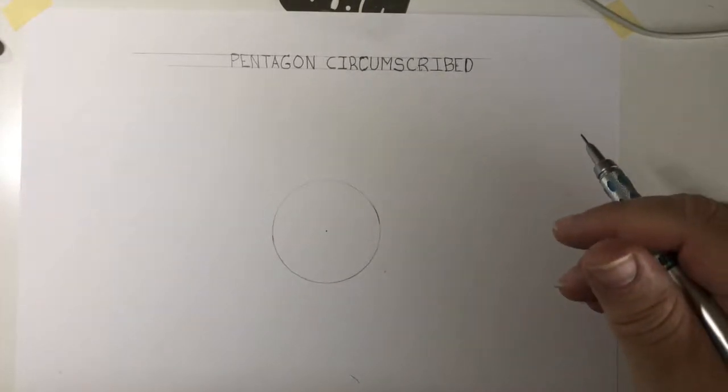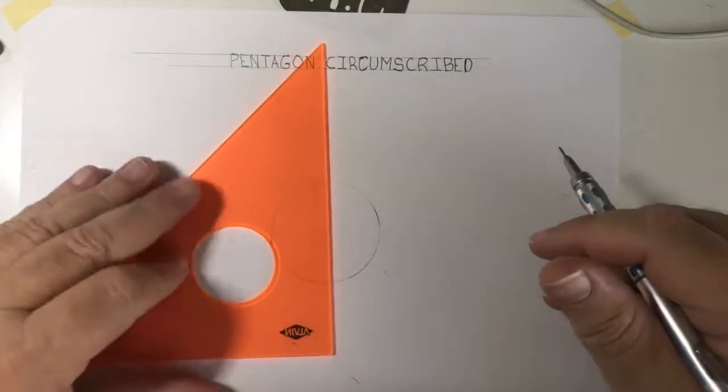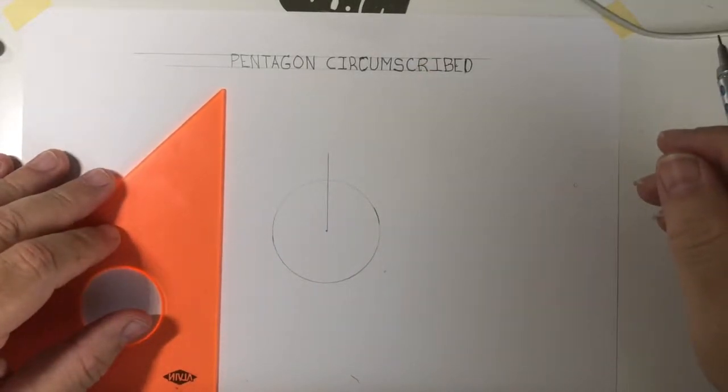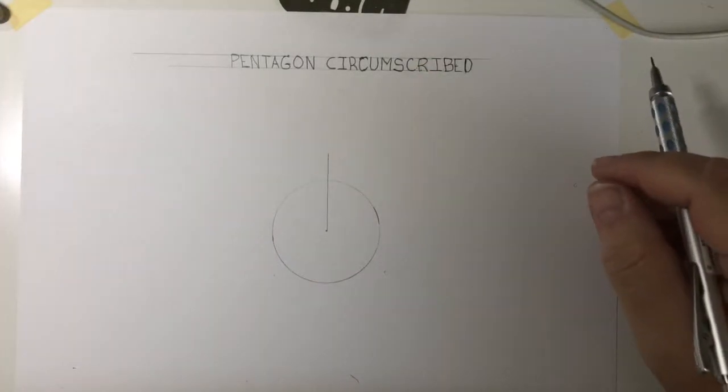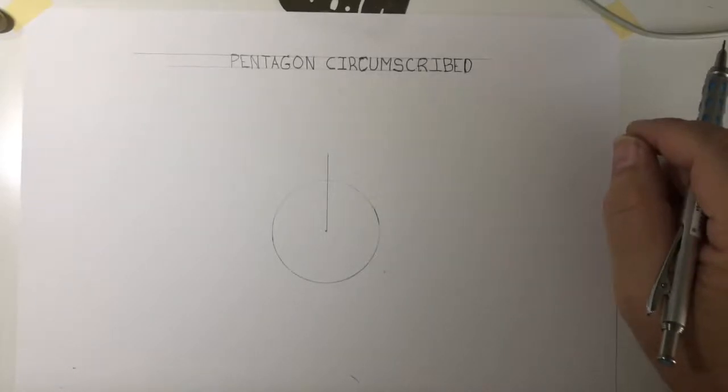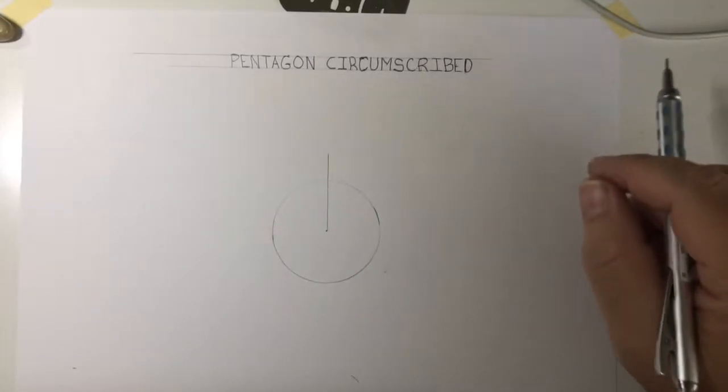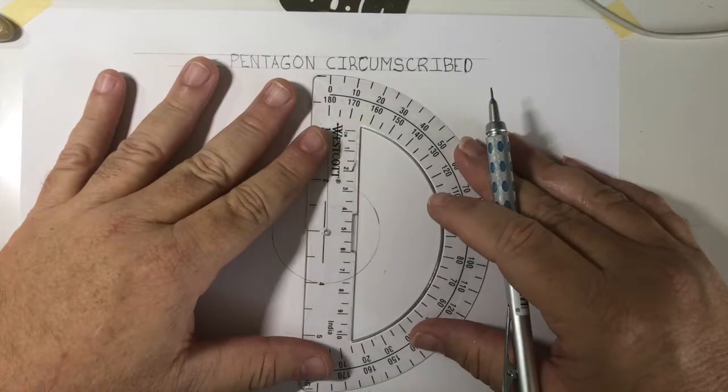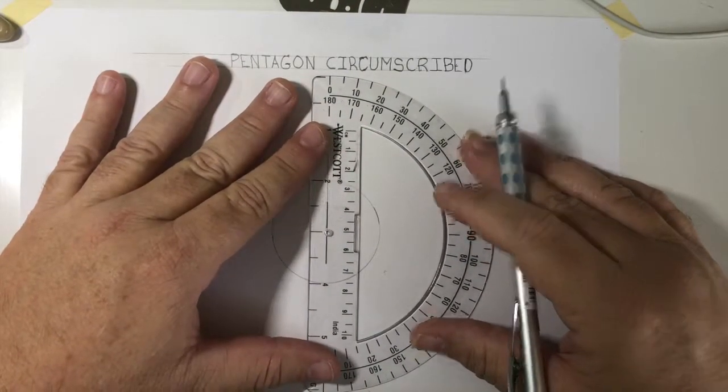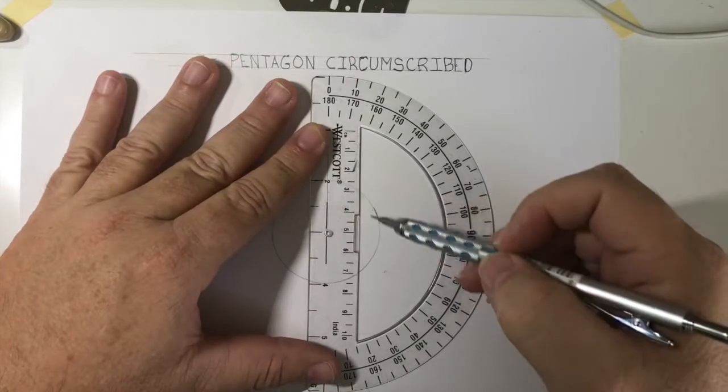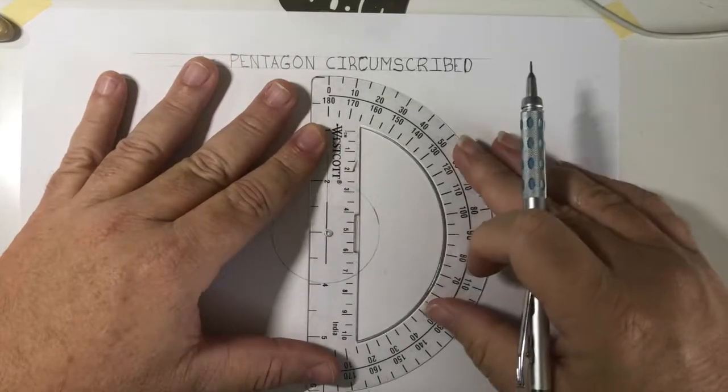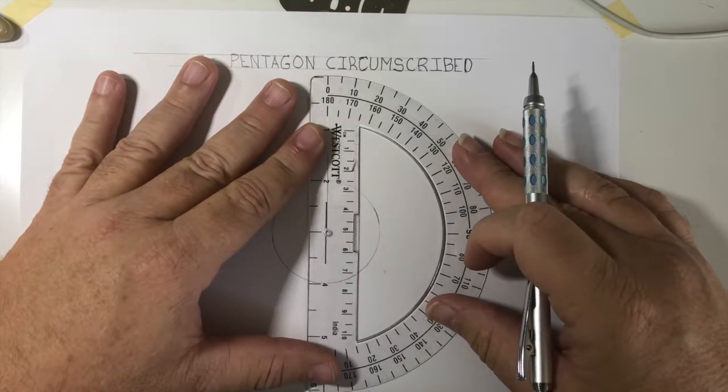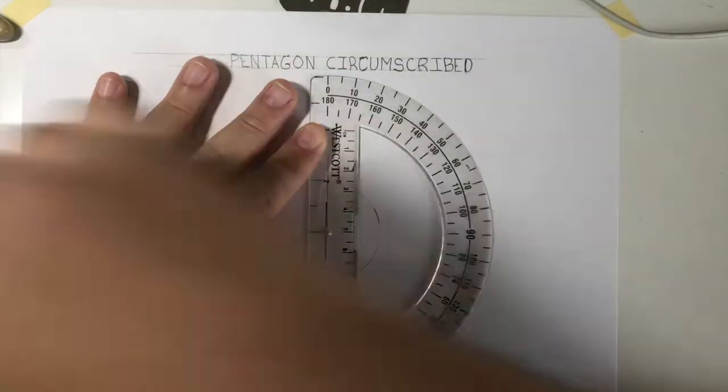Now the first thing I'm going to do is through the center I'm going to draw a vertical line. Then I'm going to take my protractor and I'm going to measure 72 degrees, because that is the angle between the different corners on a pentagon. Make sure my protractor is lined up really well.